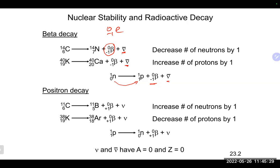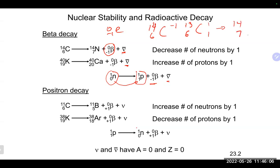Overall, the mass number doesn't change in beta decay. To understand why: we take out a neutron (subtracting one from the mass number, going from 14 to 13 and atomic number 6), then form a proton (adding one back to each), which takes us back to 14 and atomic number 7. We're essentially swapping a neutron for a proton in the mass number, so overall the mass number remains the same.